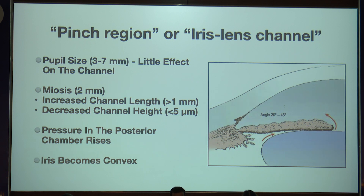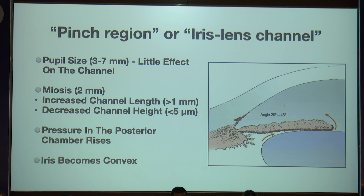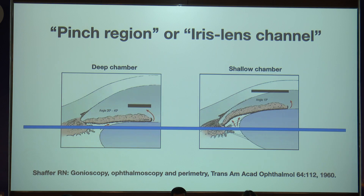When the pupil is 3–7 mm in size, it doesn't have any effect on the IOP. But when miosis happens, the channel length increases and the channel height decreases. When the length increases or height decreases, the posterior iris comes in contact with the anterior lens, pressure rises even more in the posterior chamber, and the iris becomes convex. In a hypermetropic eye, the pinch region is more pronounced than in a myopic eye, and the lens is more anterior.